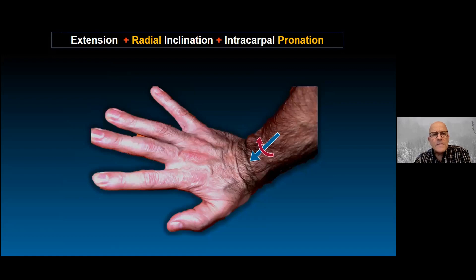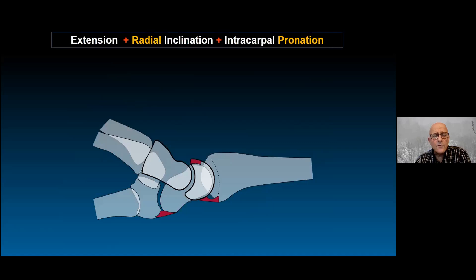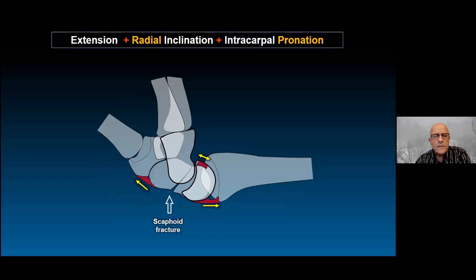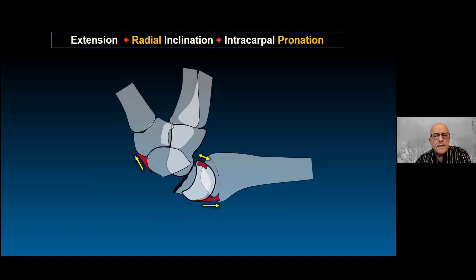If instead of ulnar deviation there is radial deviation with extension and intracarpal pronation, the proximal pole of the scaphoid becomes blocked by the radioscaphocapitate ligament, producing a bending fracture of the scaphoid. The distal scaphoid then follows the distal row while the proximal scaphoid remains attached to the lunate — creating a trans-scaphoid perilunate pattern with the same stage progression applying to the proximal scaphoid and lunate complex.